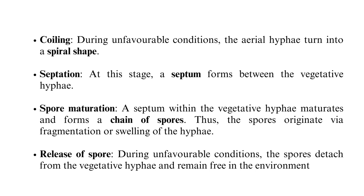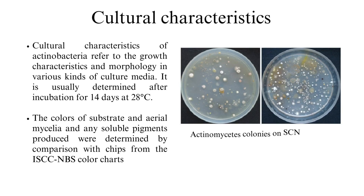Septation: at this stage, a septum forms between the vegetative hyphae. Spore maturation: the septum within the vegetative hyphae matures and forms a chain of spores; spores originate via fragmentation or swelling of the hyphae. Release of spore: during unfavorable conditions, the spores detach from the vegetative hyphae and remain free in the environment.